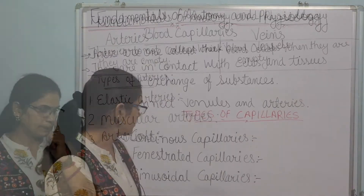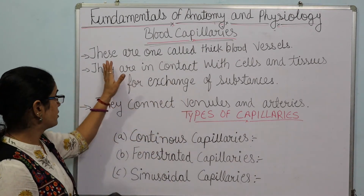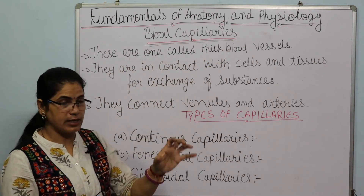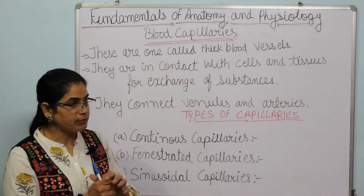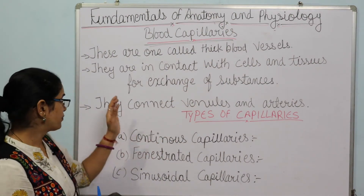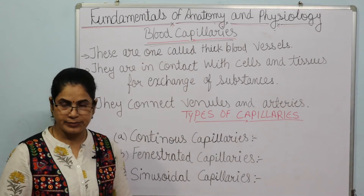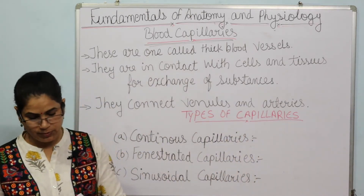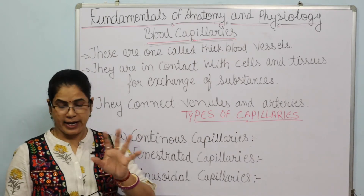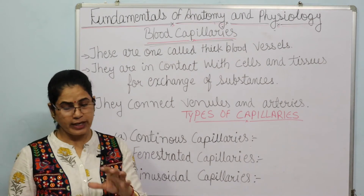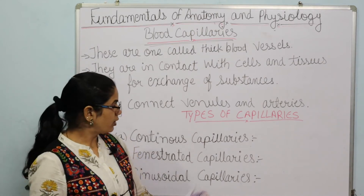Now we will take up blood capillaries. Blood capillaries are also called thick blood cells — they are in contact with cells and tissues for the exchange of substances. They connect venules and arteries. These are very small blood vessels and their walls are thin, connecting arteries and veins to the blood capillaries.